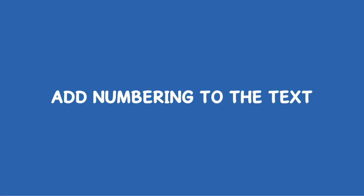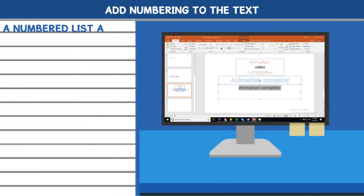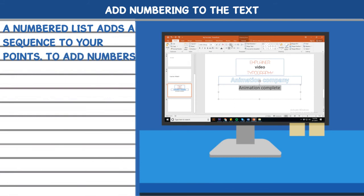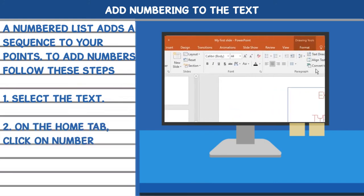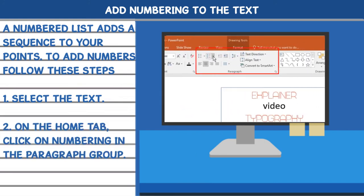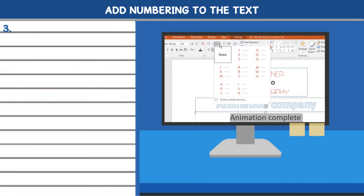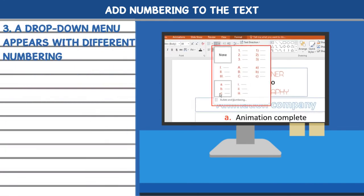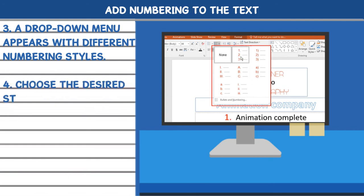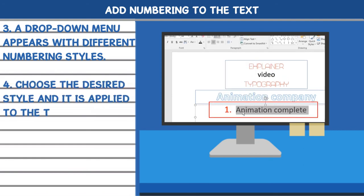Add numbering to the text. A numbered list adds a sequence to your points. To add numbers, follow these steps. 1. Select the text. 2. On the home tab, click on Numbering in the paragraph group. 3. A drop-down menu appears with different numbering styles. 4. Choose the desired style and it is applied to the text.